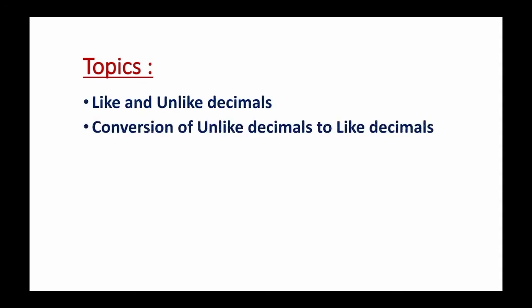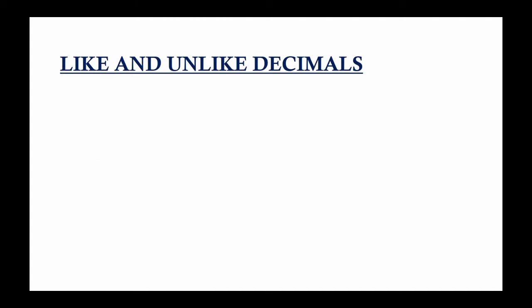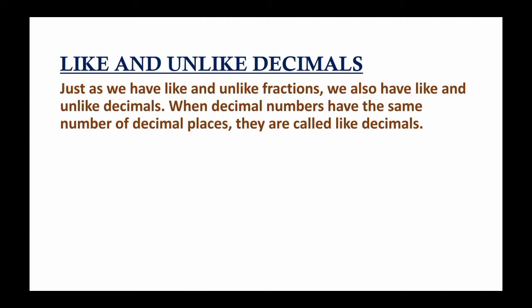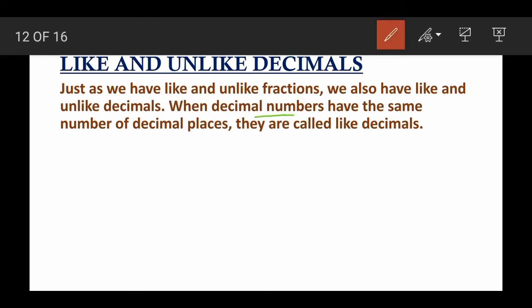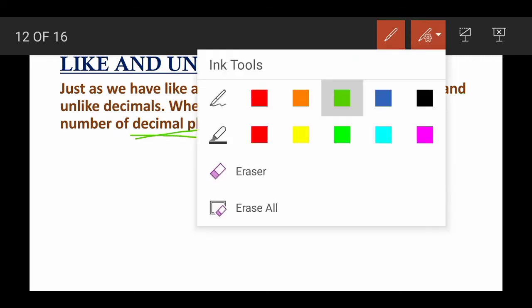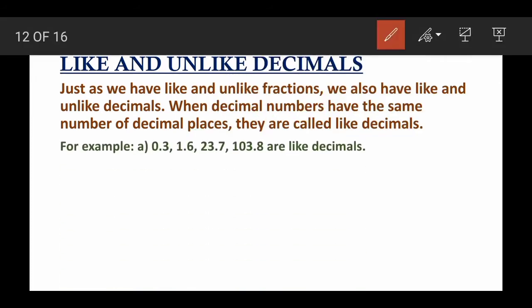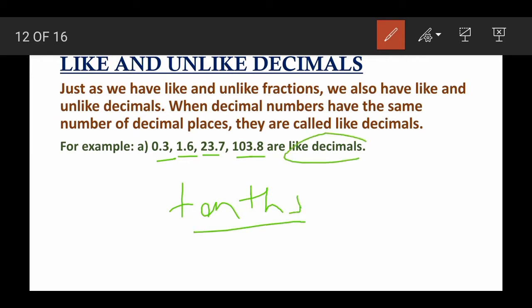Today we will cover like and unlike decimals, conversion of unlike decimals to like decimals, and ordering of decimals. Just as we have like and unlike fractions, we also have like and unlike decimals. When decimal numbers have the same number of decimal places, they are called like decimals. You just have to compare the number of decimal places present in each number — if it is the same, they are like decimals.